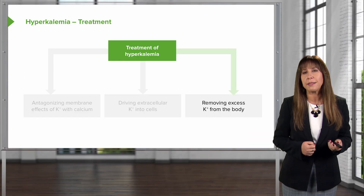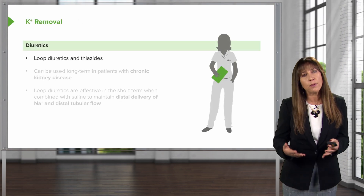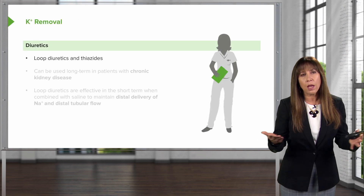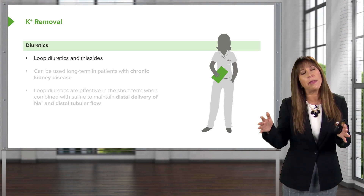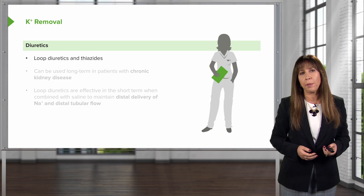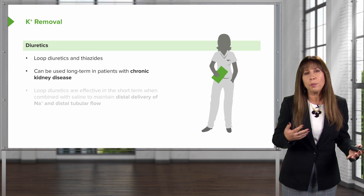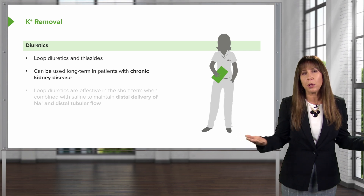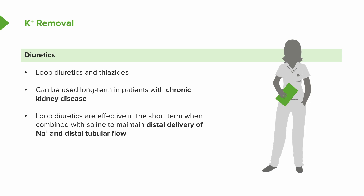Finally, we're left with removing excess potassium from the body. Number one is diuretics. Loop diuretics and thiazide diuretics work through increased distal delivery of sodium, which mediates potassium efflux into the tubular fluid. We can use these in patients who are relatively stable and long-term outpatients with chronic kidney disease. Loop diuretics can also be effective short-term when combined with saline to maintain distal delivery of sodium, but we rarely do this.